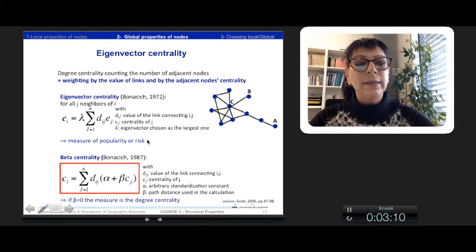This eigenvector centrality was generalized with the beta centrality, where we can make vary the path distance, beta, which is used in the calculation. So beta can vary from 0, which is the measure of degree centrality, to 1, so 1 neighbors.